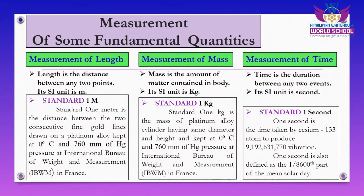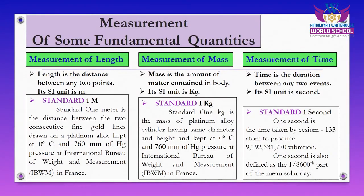Standard one meter is the distance between two consecutive gold lines drawn on a platinum alloy kept at zero degrees Celsius and 760 mm of Hg pressure at the International Bureau of Weight and Measurement (IBWM), which is in France.